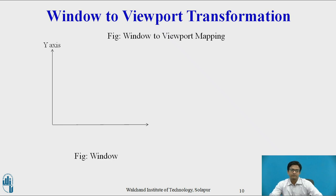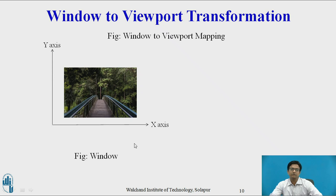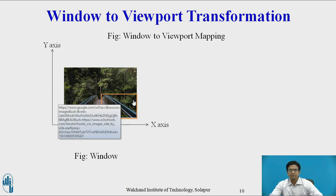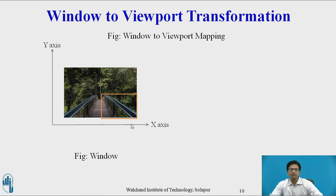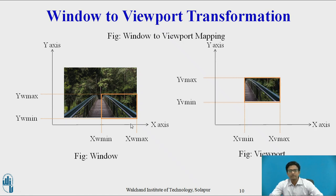This figure shows an image from the window, and a selected part is displayed on the viewport. The window coordinates are: y_w_min and y_w_max (min/max y coordinates of window), x_w_min and x_w_max (min/max x coordinates of window). The viewport coordinates are: y_v_min and y_v_max (min/max y coordinates of viewport).